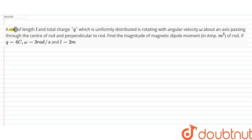Our question is: we have a rod of length L and total charge Q. We have distributed it uniformly and it is rotating with angular velocity omega about an axis which is passing through the center of the rod and perpendicular to the rod. We will find the magnitude of magnetic dipole moment in ampere meter square of the rod if Q equals 4 coulombs, omega is 3 radians per second, and L equals 2 meters.